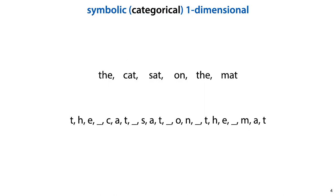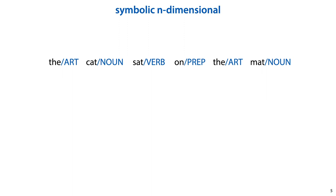If the elements of our data are discrete, analogous to a categorical feature, it becomes a sequence of symbols. Language is a prime example. In fact, we can model language as a sequence in two different ways: as a sequence of words, or as a sequence of characters. Symbolic sequences can also be multidimensional. For instance, here we see a sequence of words where each word has been tagged with its part of speech, the grammatical category of the word in context.